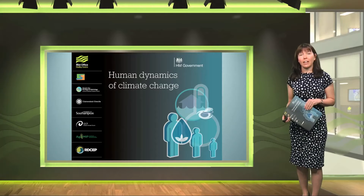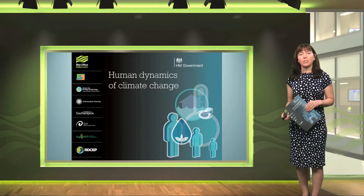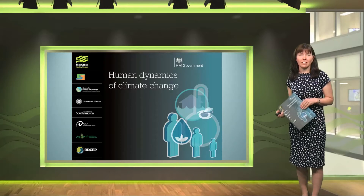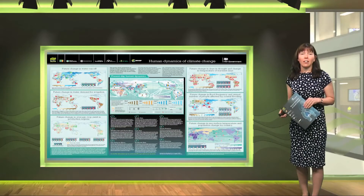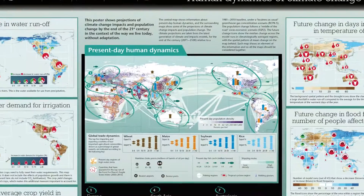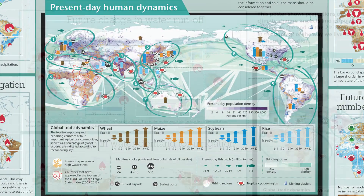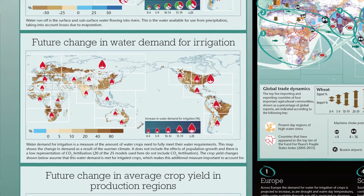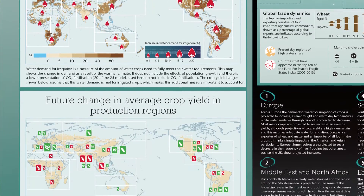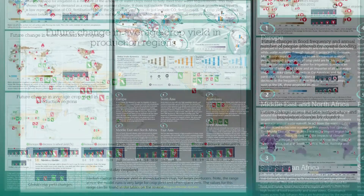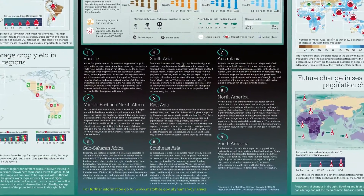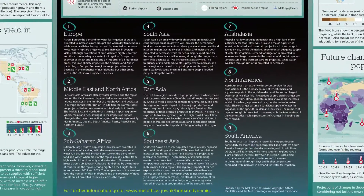It was produced by the Met Office Hadley Centre with scientific contributions from a number of other leading climate science institutions. In the centre of the map shows the present day Human Dynamics. Down each side are six maps which show eight different climate change impacts as well as population growth. In the centre below the present day Human Dynamics map are a number of short case study narratives which take you through the information for selected regions.